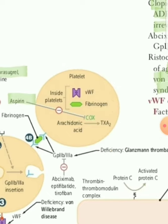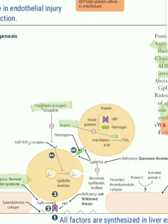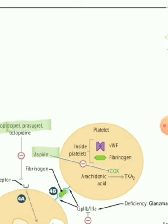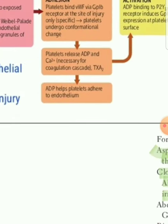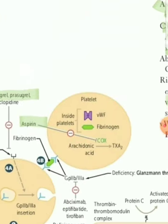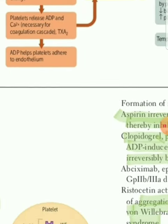Platelets also contain von Willebrand factor and fibrinogen inside, along with the arachidonic acid pathway. NSAIDs — non-steroidal anti-inflammatory drugs — block synthesis of prostaglandins, and thromboxane A2 is among them, involved in anti-platelet activity. Aspirin irreversibly binds and blocks the cyclooxygenase (COX) enzyme. So adhesion takes place: the first step is platelet adhesion to the damaged endothelium, and the second step is activation.